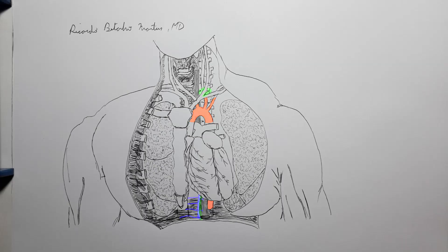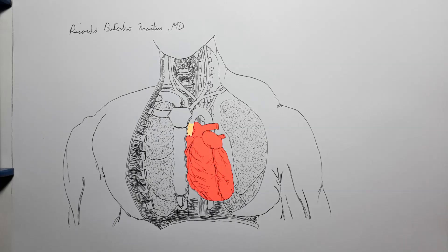And then we have the obvious middle mediastinum, containing the pericardial sac with the heart inside it, as well as the aortic root, the pulmonary trunk and arteries, and the phrenic nerves.